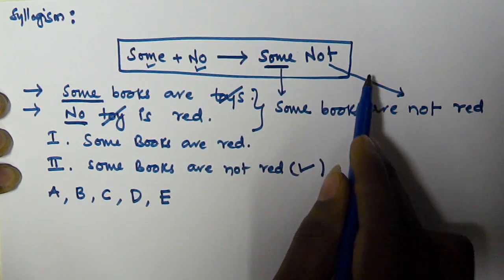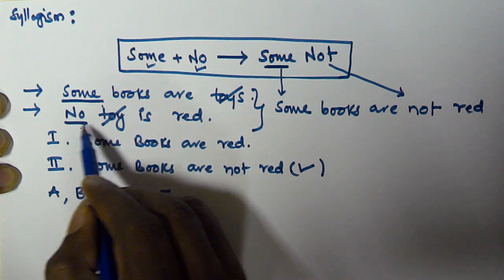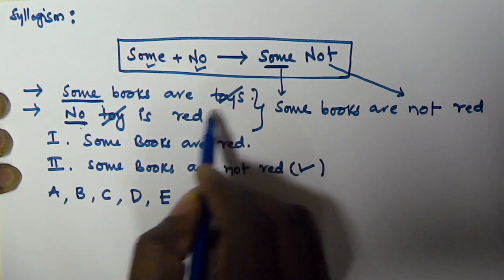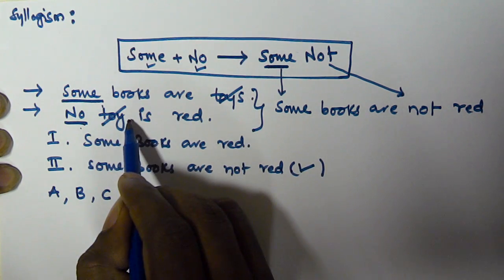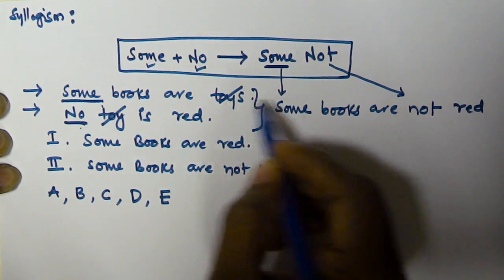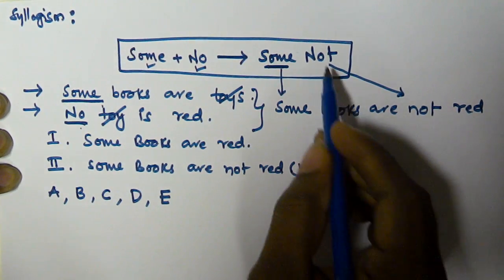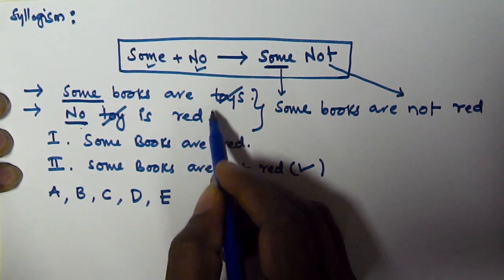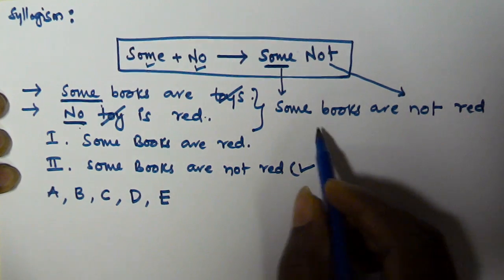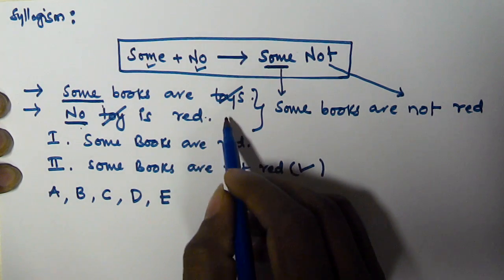To recap: the first syllogism starts with 'some,' the second starts with 'no,' and the predicate of the first is equivalent to the subject of the second. In that case, we take 'some,' then the subject from the first syllogism ('books'), then 'not,' then the predicate from the second statement ('red'). This gives the conclusion derived from the two given syllogisms.